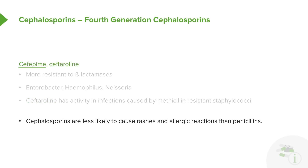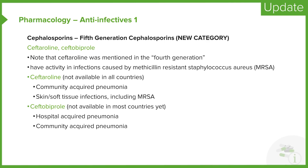Remember that the cephalosporins are less likely to cause rashes and allergic reactions when compared to the penicillins. There are two new fifth generation cephalosporins called ceftaroline and ceftobiprol. Please note that ceftaroline used to be called an unclassified cephalosporin. These drugs are not yet available in all countries, and the definition of the fifth generation is not agreed upon by all countries, but in the USA it is commonly accepted. These drugs have broad-spectrum activity against gram-negative bacteria similar to the third generation cephalosporins.